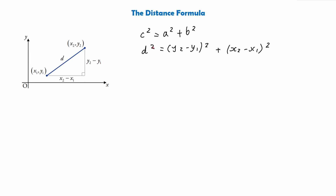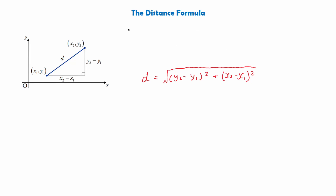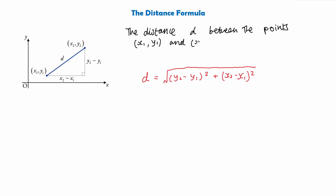To work out d, we take the square root of d squared, and apply the same to the right-hand side. So d is equal to the square root of (y2 subtract y1) squared plus (x2 subtract x1) squared. And this is what we call the distance formula. The distance d between the points x1,y1 and x2,y2 is given by this formula.